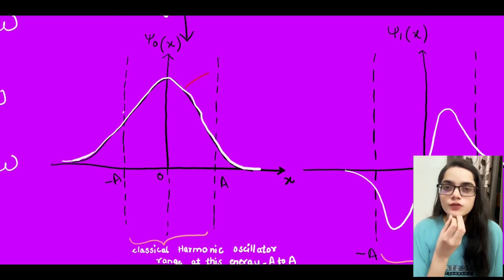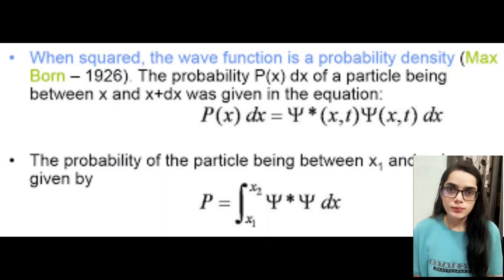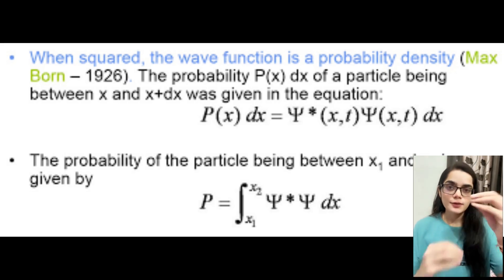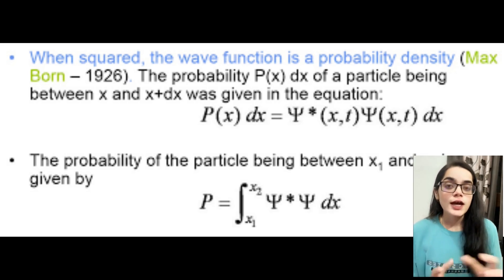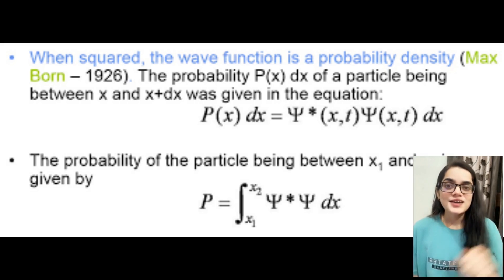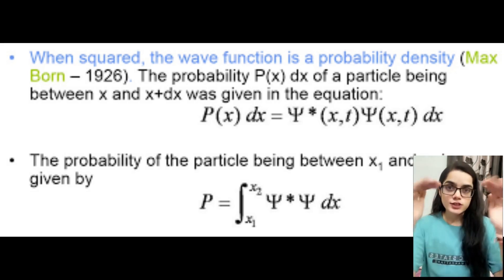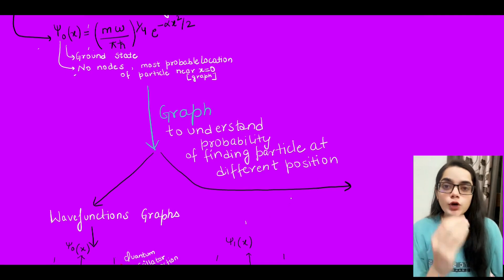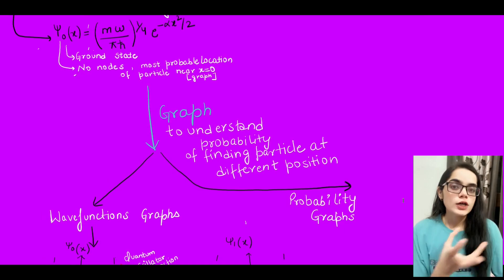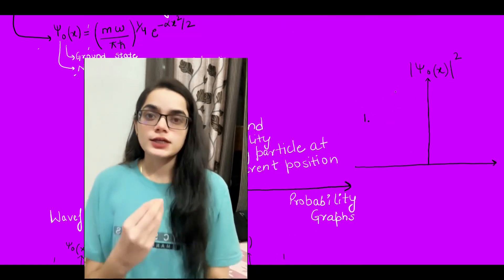After understanding the wave function graph, we can draw the probability graph. We calculate probability by applying limits, taking the complex conjugate of the wave function, multiplying it by the wave function, and getting the probability density |ψ(x)|². The parts of the wave function that were negative will now become positive peaks. So we draw probability graphs that show the most probable places where the particle can be found and the least probable places.